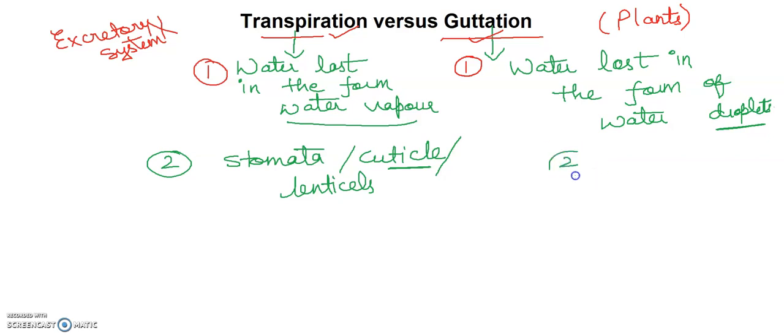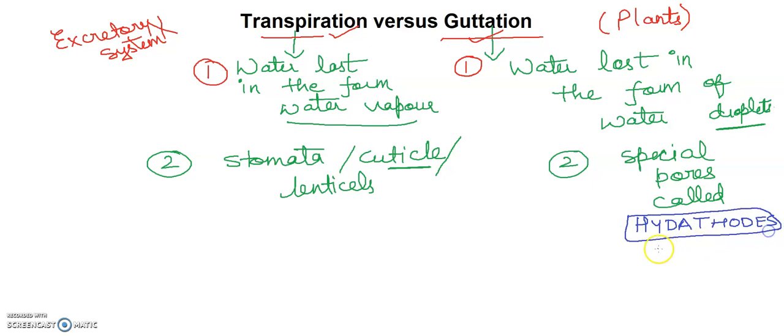If we talk about guttation, guttation occurs through special pore-like structures called hydathodes. What is the pore-like structure? Hydathodes. I use different colors so that students will be very clear. The exam question may come many times: name the special structure which is found in plants for the process of guttation. This special structure is called hydathodes.